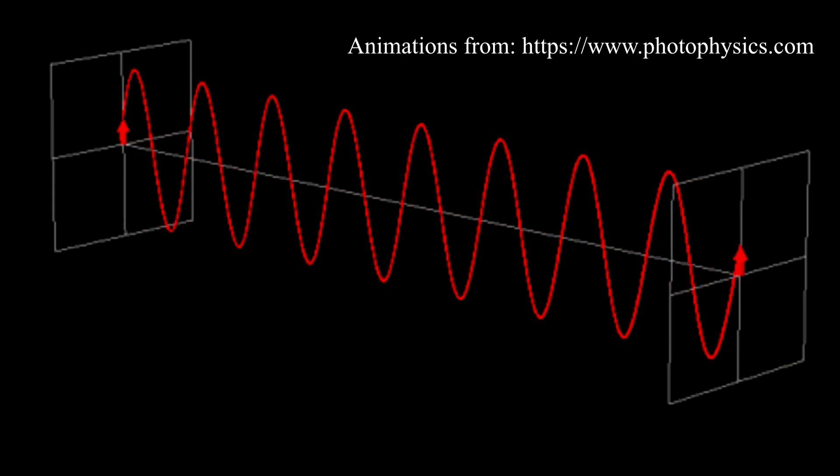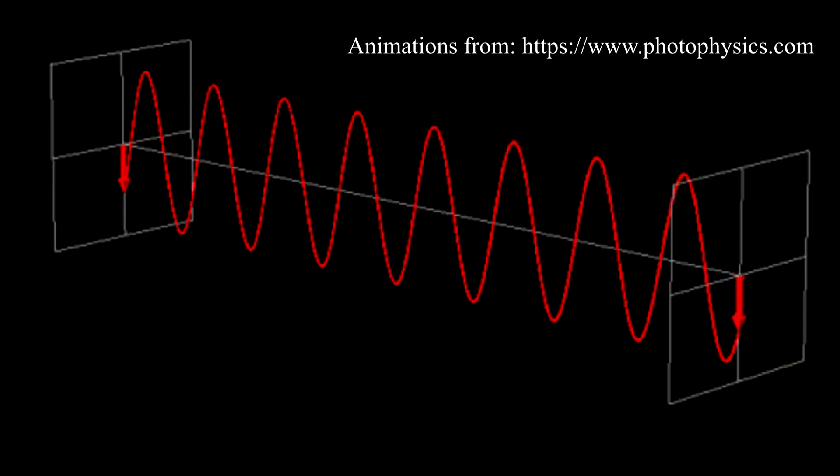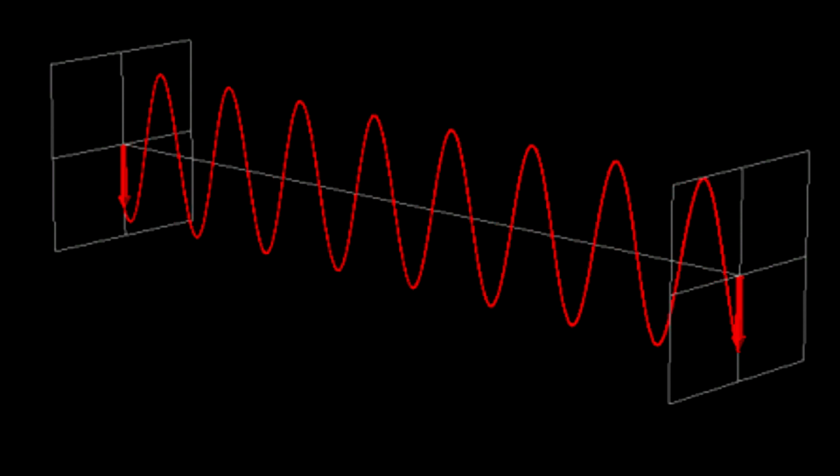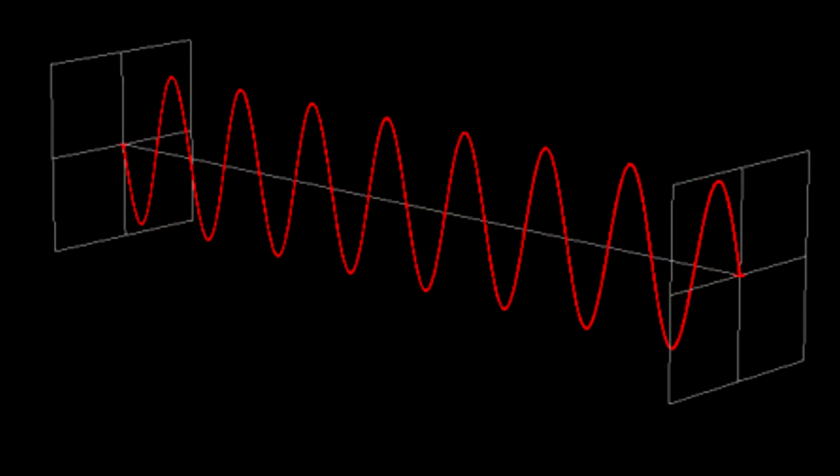The easiest polarization to talk about is linear polarization, because that's when all the waves are in phase with each other. This animation shows a vertically oriented linearly polarized wave. We call it vertically oriented because it's straight up and down.